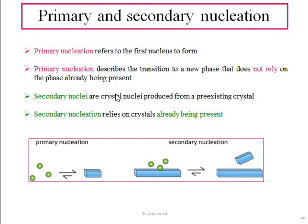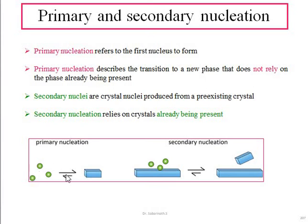The first concept is primary nucleation. Primary nucleation refers to the very first nucleus which forms. Primary nucleation describes the transition to a new phase that does not rely on a phase which is already present. For example, imagine a liquid phase — when a phase change occurs, the liquid converts into a solid, and that first nucleus formed is called primary nucleation.